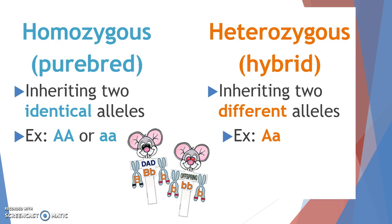The other combination — inheriting two different alleles — is defined as being heterozygous, where 'hetero' means different. The synonym for heterozygous is hybrid. This gives you one capital and one lowercase allele making up your genotype. To remember the difference: a homosexual relationship involves someone of the same sex, while a heterosexual relationship involves the opposite sex. So homozygous means same, heterozygous means different.